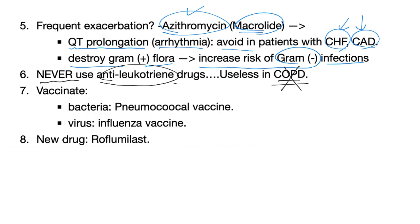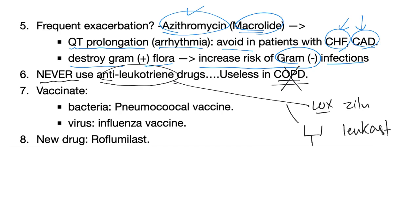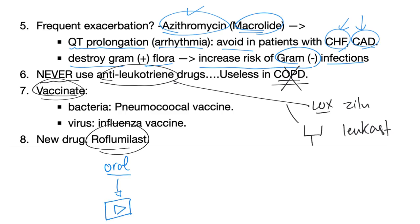Why no anti-leukotrienes? Because in the pathogenesis of COPD, leukotrienes are not involved whatsoever. Do not use LOX inhibitors such as zileuton, and do not use leukotriene receptor antagonists such as montelukast. Vaccinate the patient: pneumococcal vaccine against bacteria and influenza vaccine against the virus. New oral drug: roflumilast — watch the Respiratory Pharmacology video for its mechanism of action.